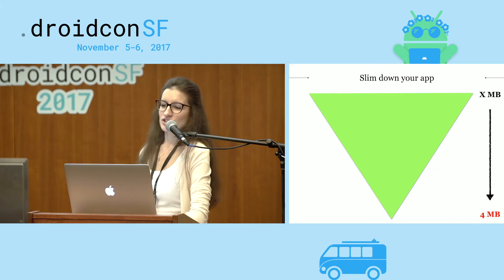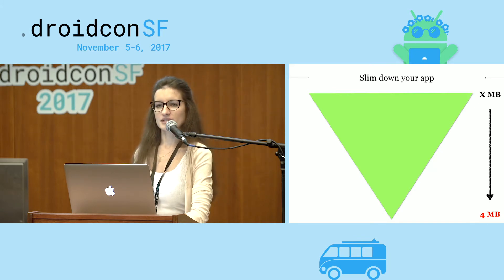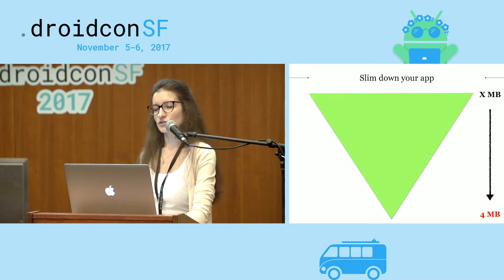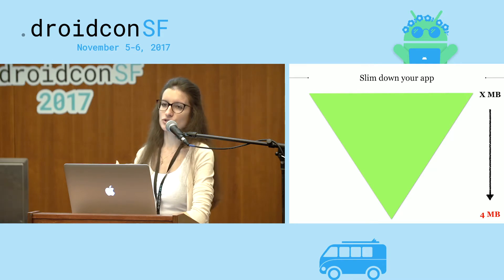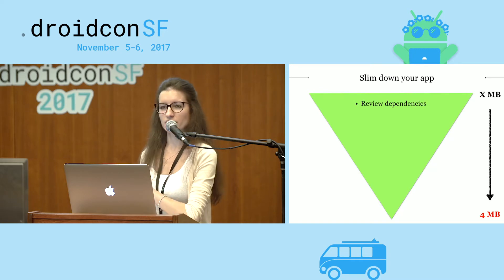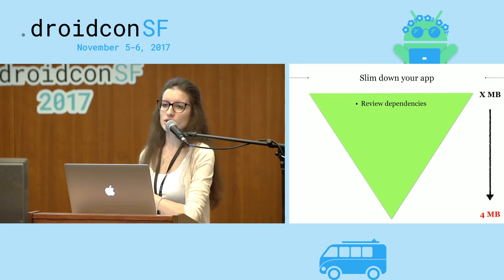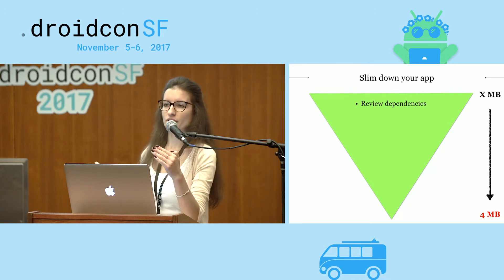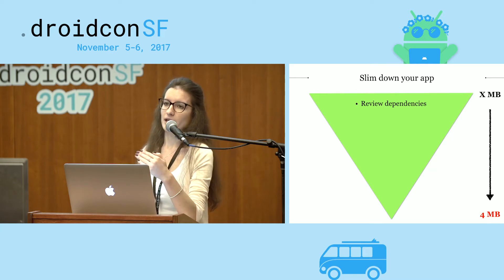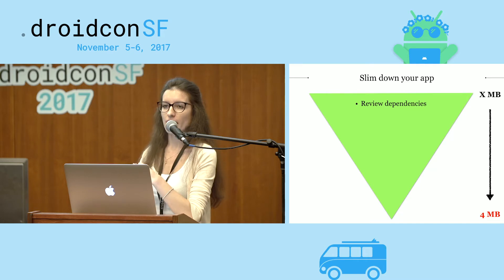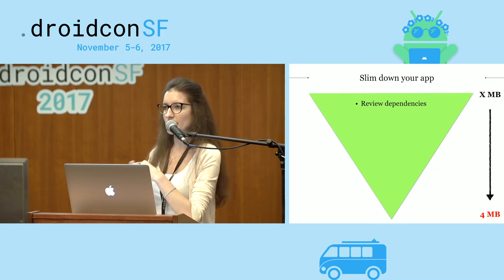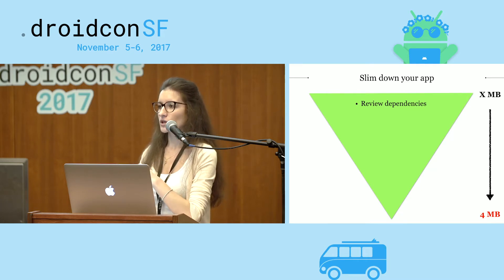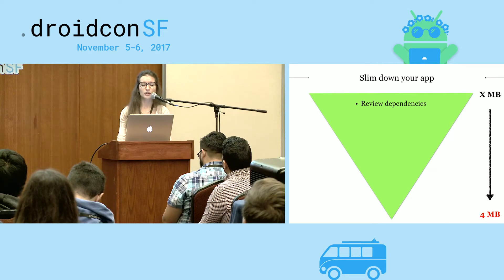Let's talk about slimming down the application from X megabytes to four megabytes. The first thing I'd advise: using the Gradle command line of dependencies, list all dependencies you currently use and evaluate each one. Try to estimate which dependencies are necessary within your Instant App and which are not important and can be removed.